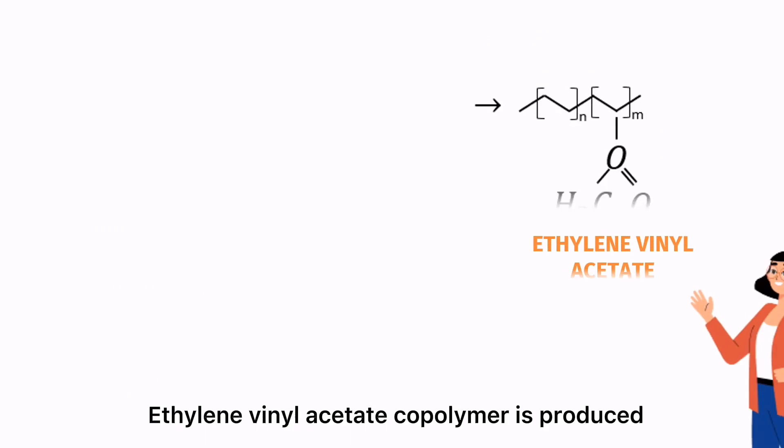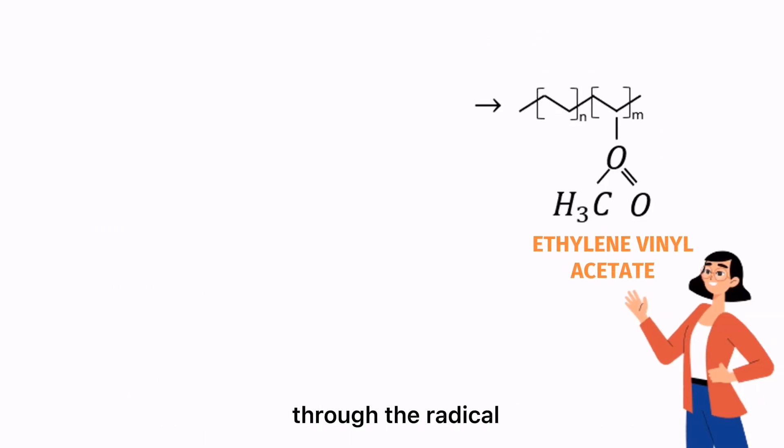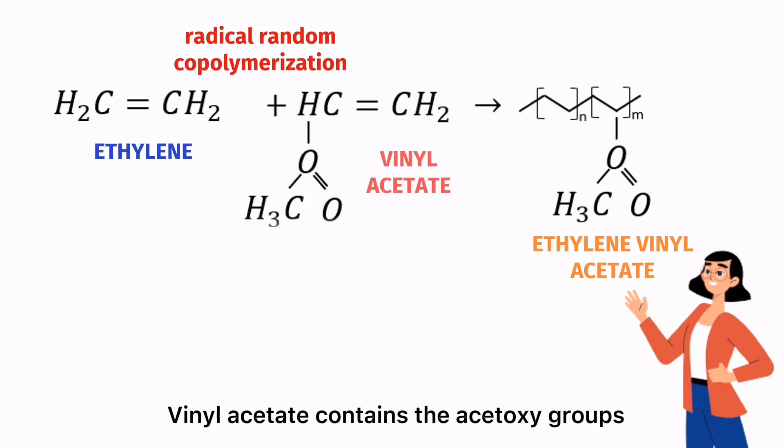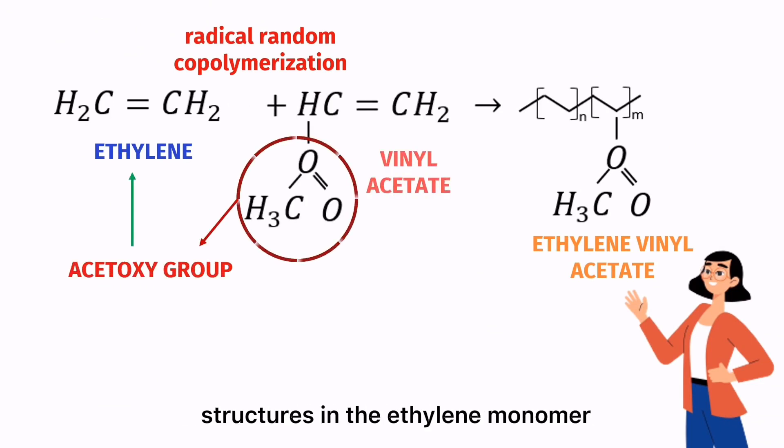Reaction scheme: Ethylene vinyl acetate copolymer is produced through the radical random copolymerization of the monomers ethylene and vinyl acetate. Vinyl acetate contains the acetoxy groups. It will disorder the crystal structures in the ethylene monomer.